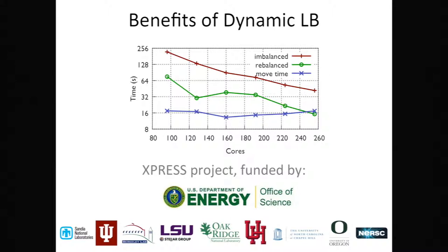Additionally, the balanced execution is 15 to 20% faster than the imbalanced execution. Thus, automatic dynamic load balancing in HPX-5 enables scalable execution of FMM.